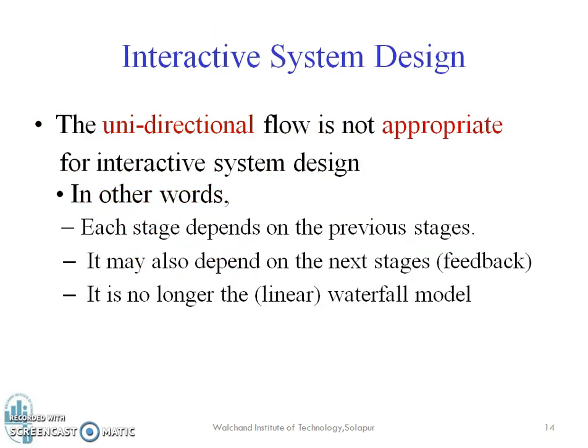Whereas in interactive system design, the unidirectional flow is not appropriate. Each stage depends on the previous stage, but it may also depend on the next stage — that is, the feedback. Thus, it is no longer a linear waterfall model. The basic difference is that in an interactive system design, it is not necessary that one stage strictly follows the next; it may also depend on feedback, so it is not a linear flow.